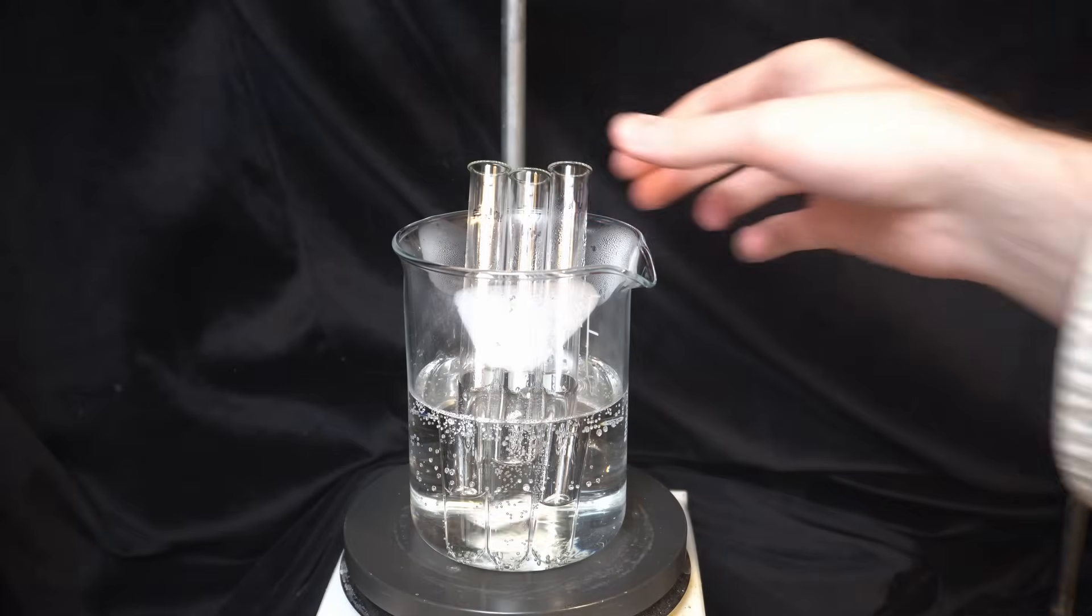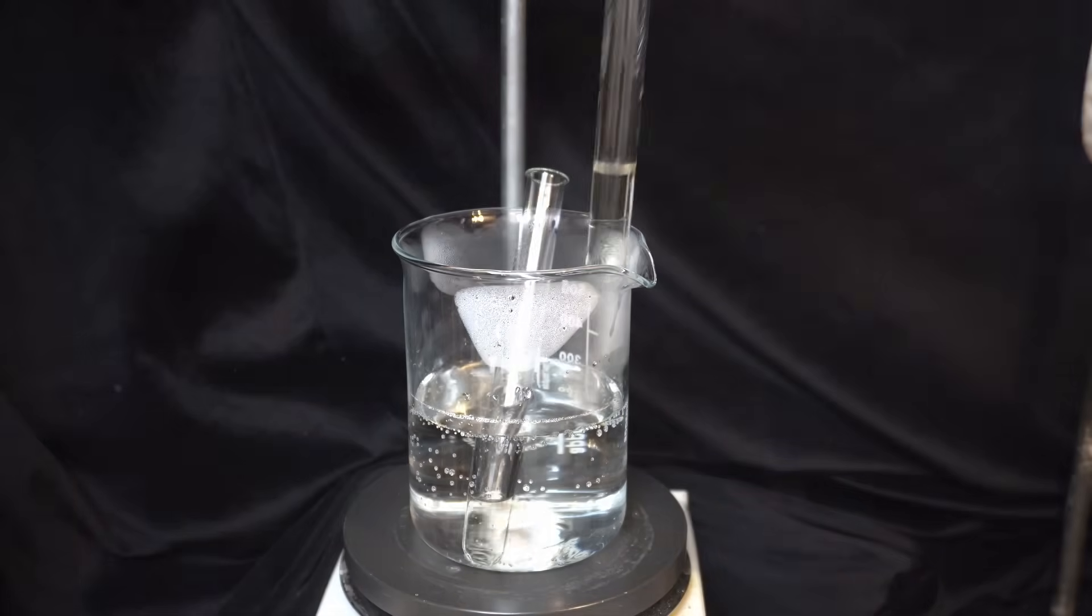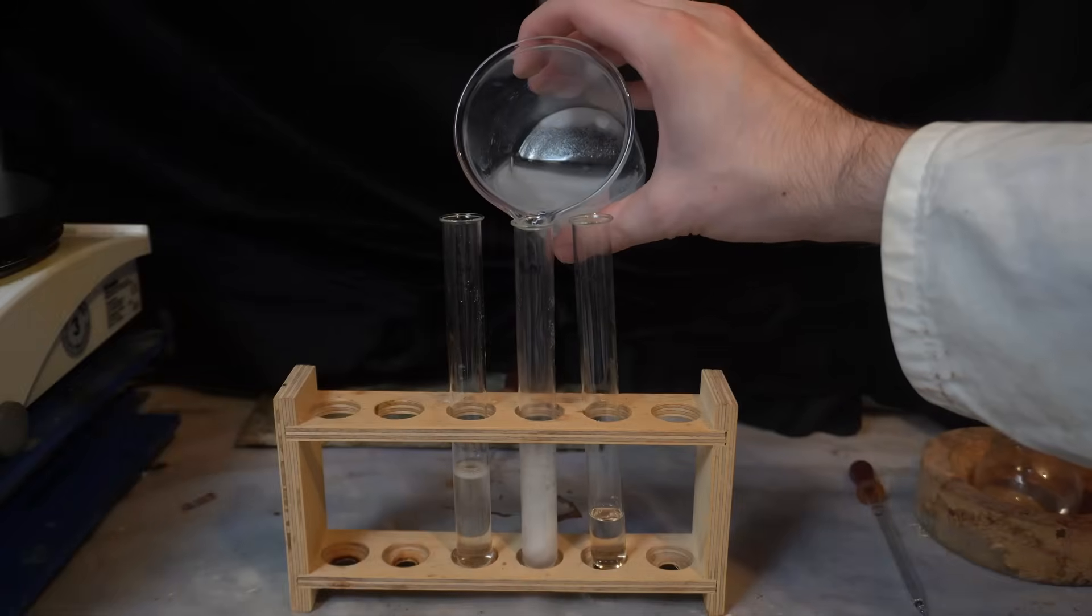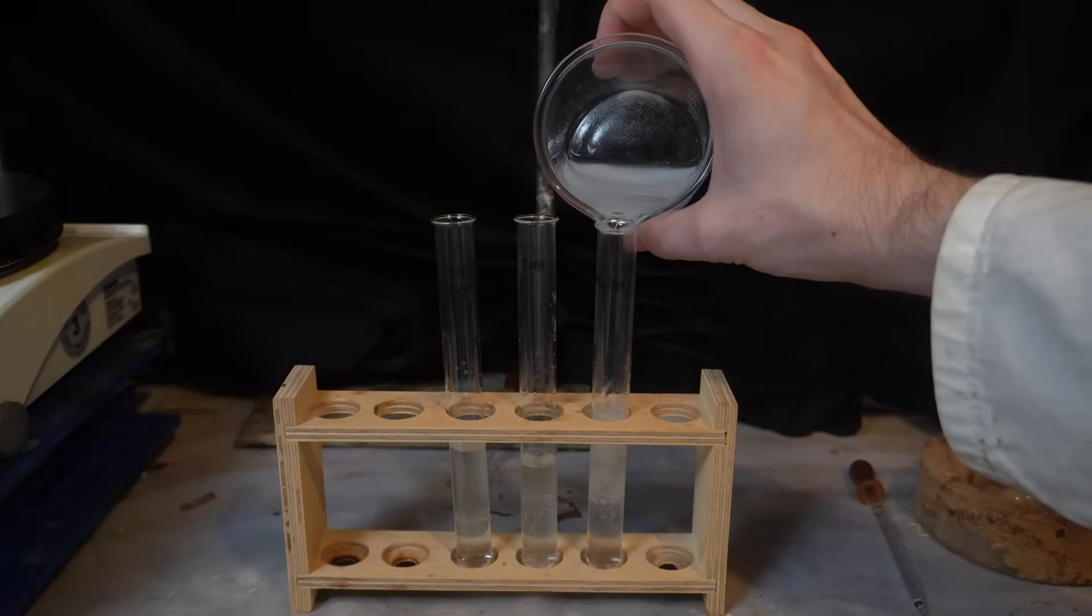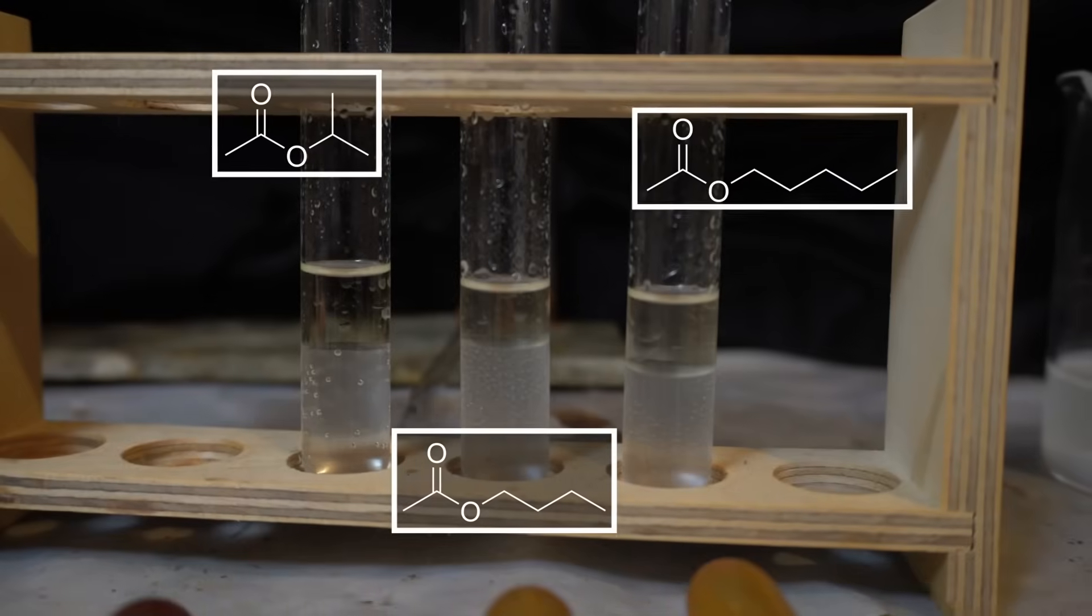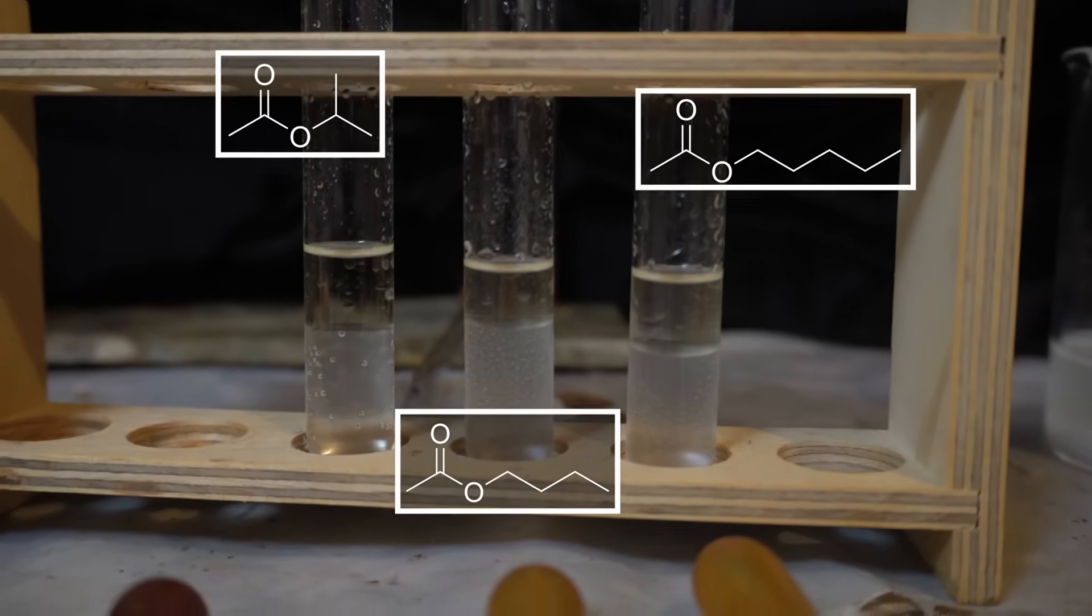The reaction should be done now, so we can take the test tubes out of the water bath and then do a quick workup by adding some sodium bicarbonate solution to neutralize all of the acid and washing it a little bit. And there you go. The upper organic layer is practically pure ester made in about 10 minutes.